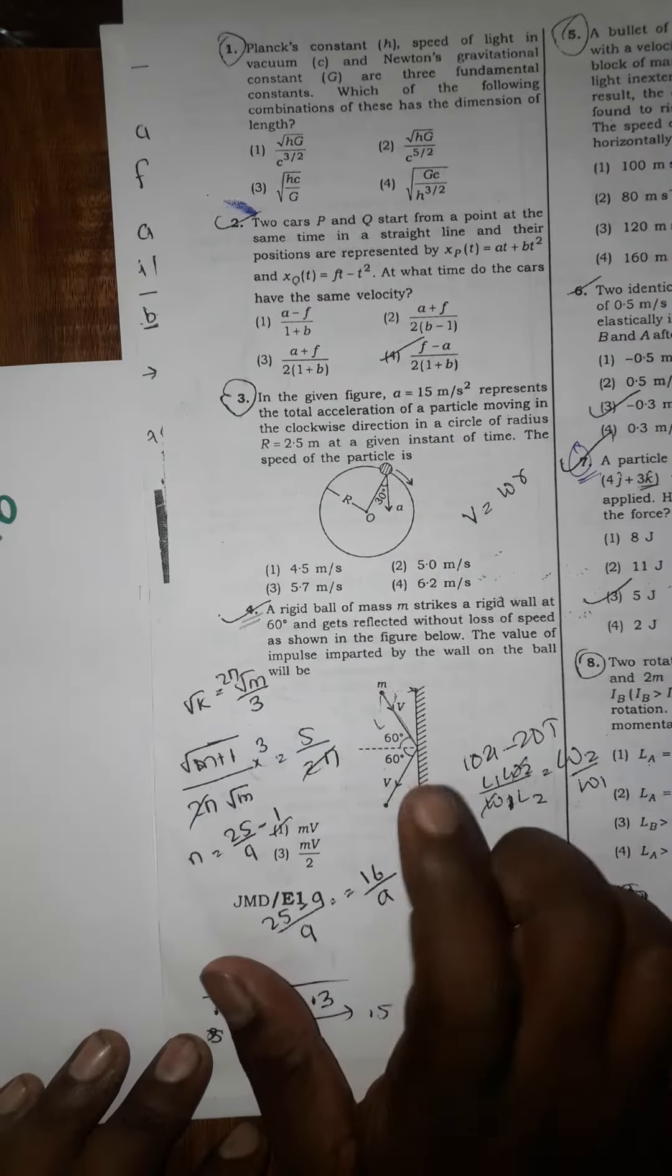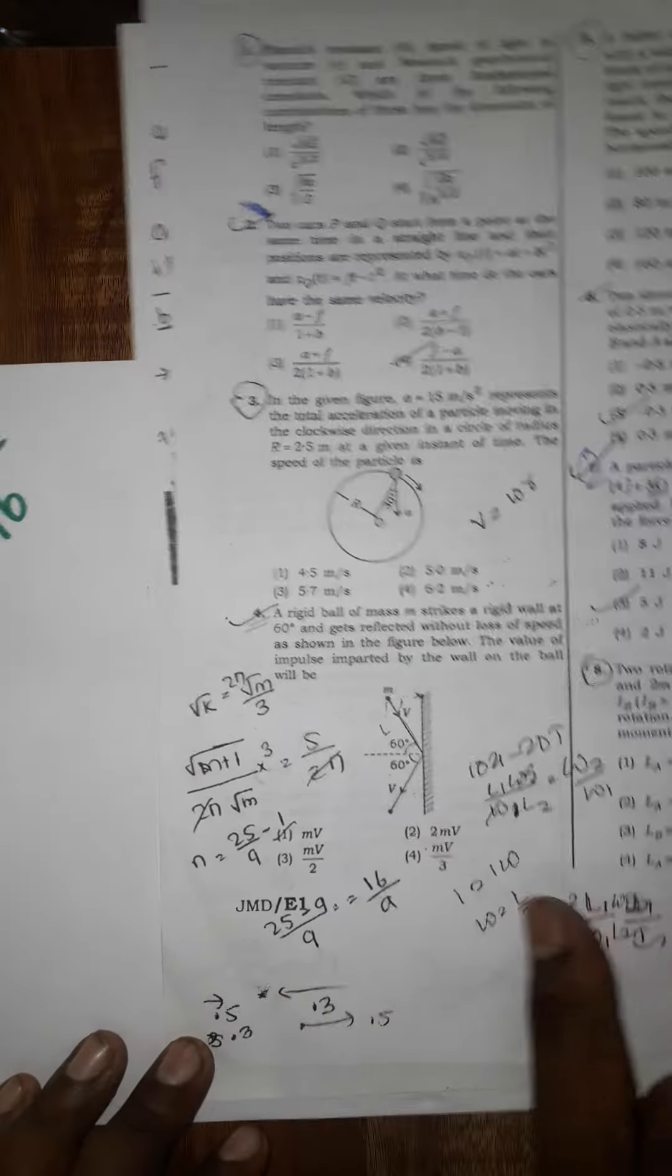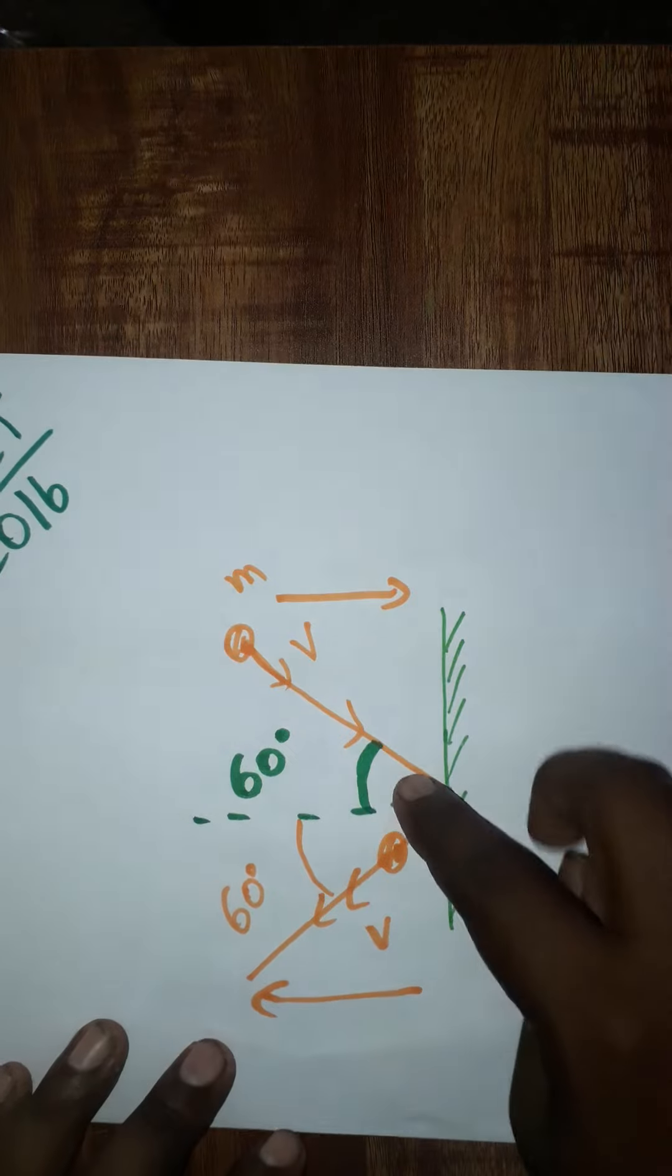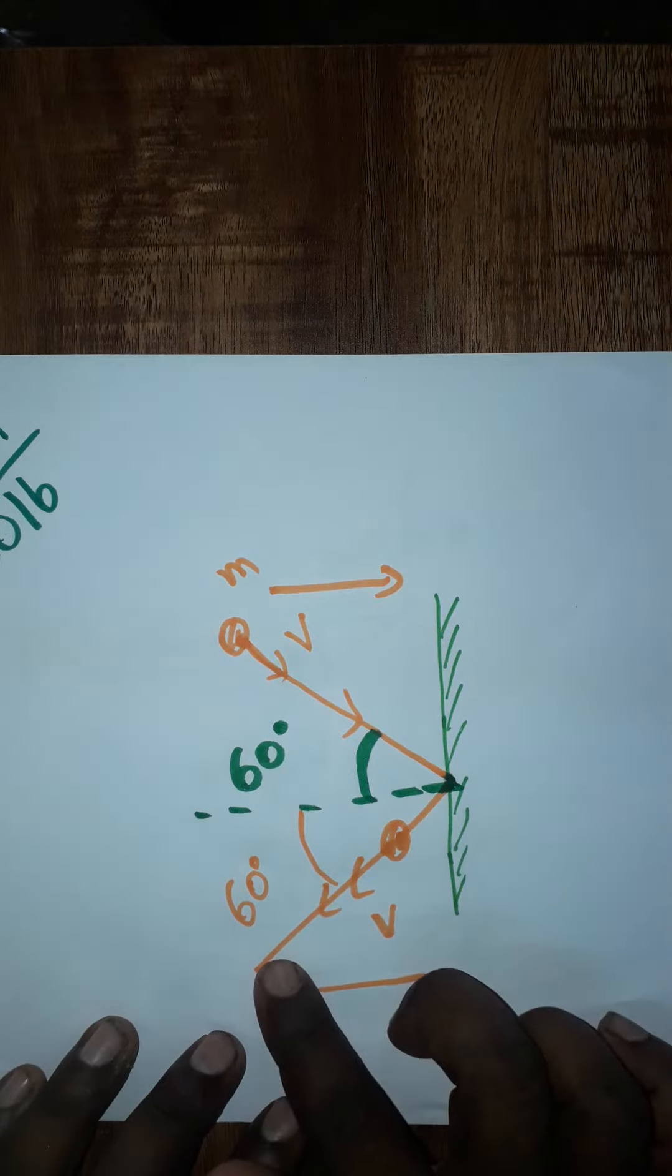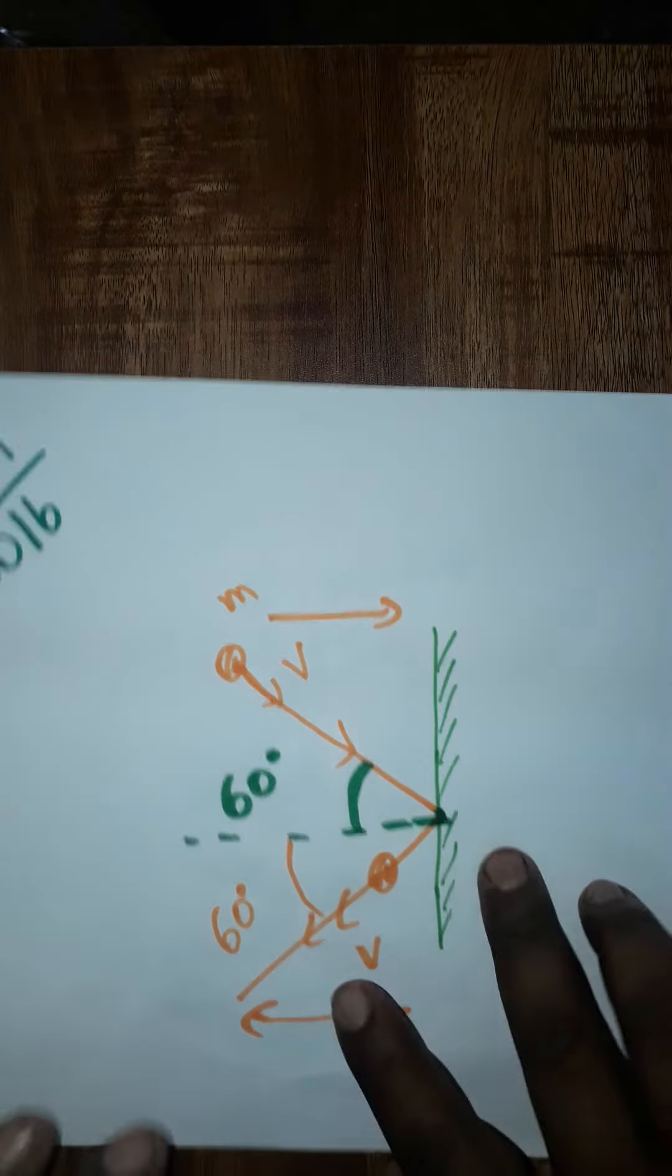Hello students, today we are going to discuss NEET 2016 question which is asked from momentum. The ball is incident at 60 degrees, the ball is reflected at 60 degrees with velocity mv. First we will do the incident case.